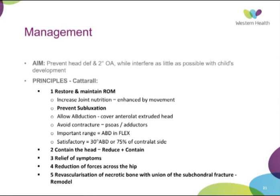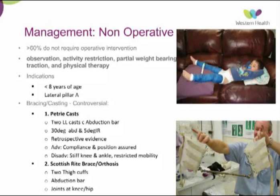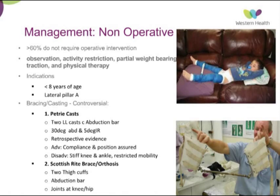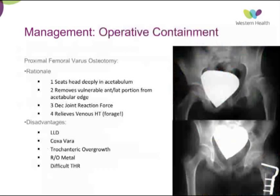Over 60% of patients do not require any operative intervention. Non-operative management includes observation, activity restriction, partial weight-bearing, traction, physiotherapy, and bracing. Indications are typically less than eight years of age with lateral pillar A. The use of bracing and casting is controversial with very little evidence. Options include Petrie casts — bilateral leg plaster with a broomstick holding the legs in abduction — and the Scottish Rite orthosis, which has two thigh cuffs with a sliding bar allowing ambulation.